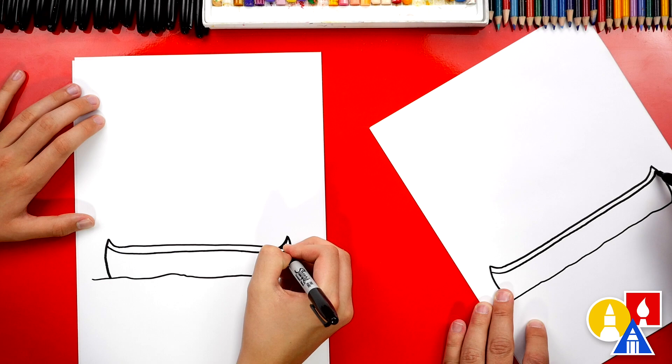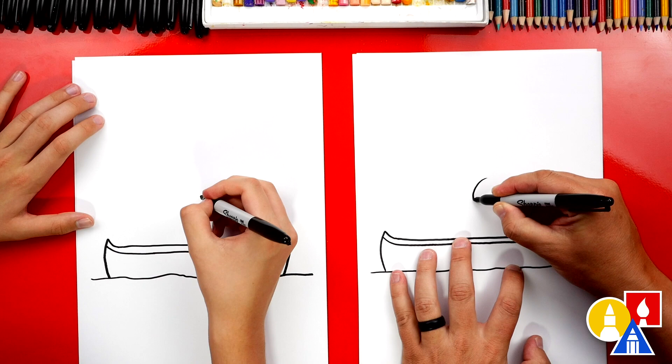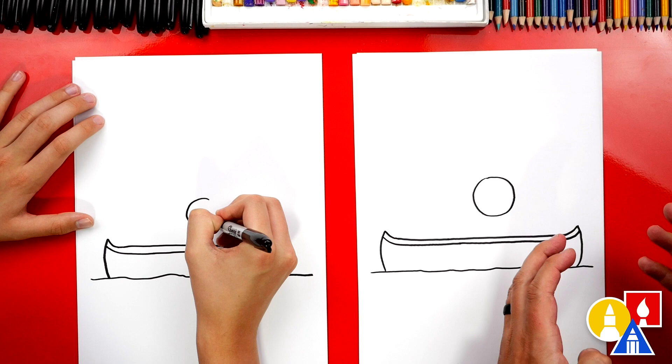What's our canoe missing? A person! Let's keep the person really simple. Let's draw a circle for their head and I'm kind of drawing them towards the back of the canoe.